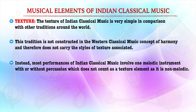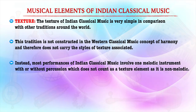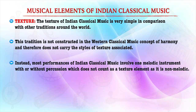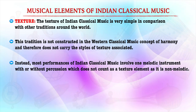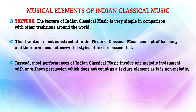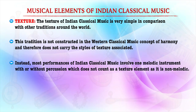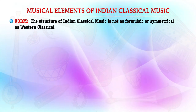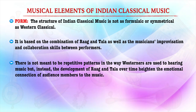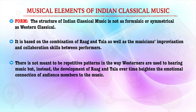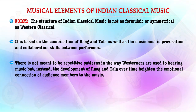The texture of Indian classical music is simple in comparison with other traditions across the world. Performances involve melodic instruments and are not strictly fixed in terms of the dimensions related to individual or group performances. These voices work in harmony, performing in line and adding to the rhythm of the music piece. Indian classical music is based on the composition of rag and tal, so there is a lot of collaboration between performers. This development of rag and tal is related to the highest emotional connection of the audience to the music.